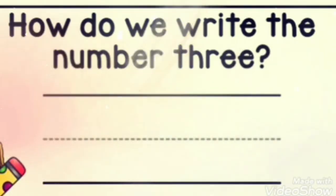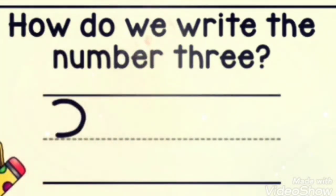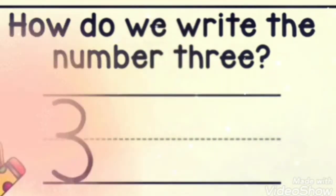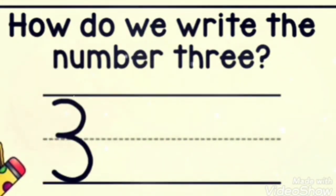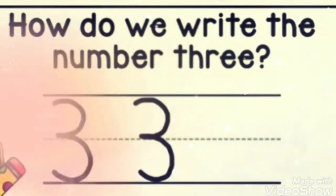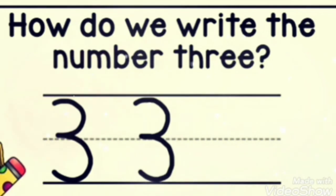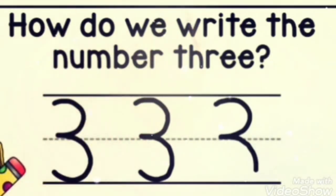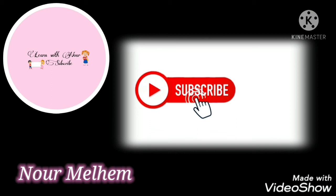Now, let's write the number 3. We start from here and make a curve, and another curve all the way down. Let's try it again — curve, curve, another curve down. Very good! Now you try. Curve, and another curve down. Number 3! Goodbye, goodbye, goodbye! Thank you.